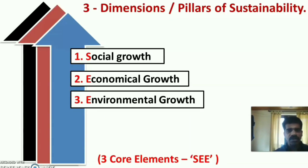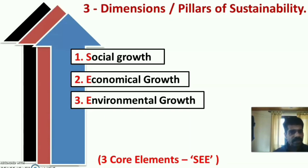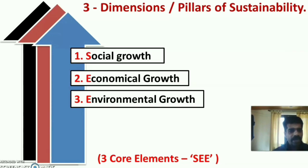There are three dimensions or pillars of sustainability: Social Growth, Economical Growth, and Environmental Growth. These are the three core elements to achieve sustainability.